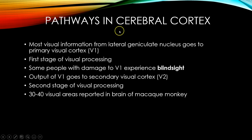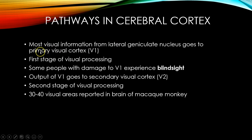Most visual information goes from the eye to the lateral geniculate nucleus, or the LGN of the thalamus — that sensory relay station — and then goes to what we call primary visual cortex, or V1, visual processing area 1. That is in your occipital lobe. It's the first stage of visual processing.